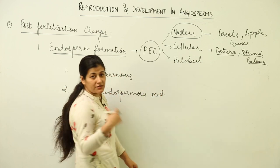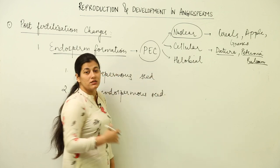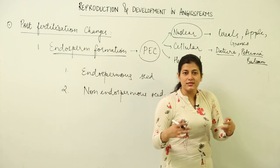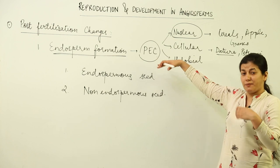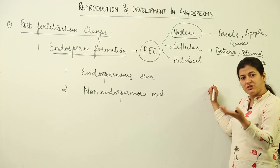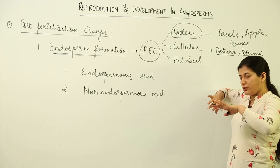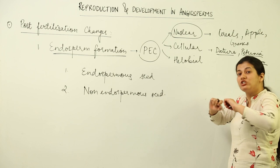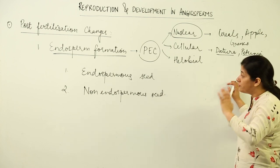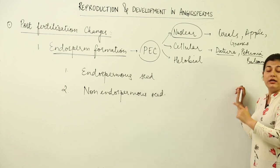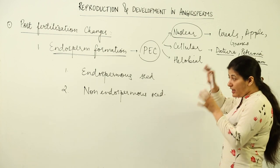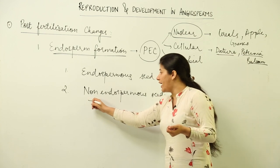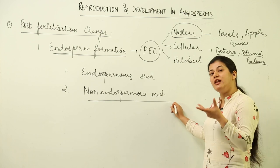The purpose of endosperm, emphasized repeatedly, is to provide nourishment to the embryo. As soon as the embryo starts developing in the post-fertilization stage, it consumes whatever is stored in the endosperm cells. At the same time, the growing endosperm crushes the nucellus cells. If the endosperm is completely consumed by the embryo, the seed becomes dry — this is known as a non-endospermous seed, or non-albuminous seed.